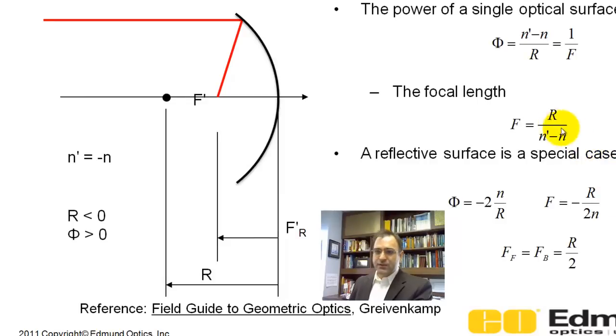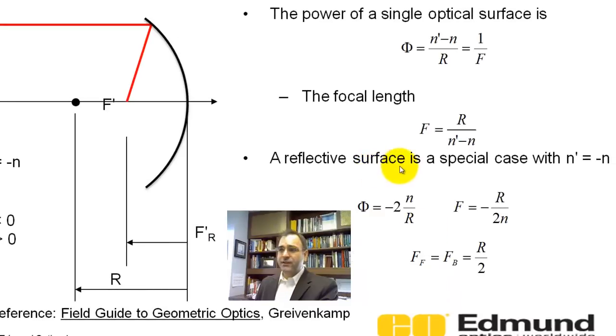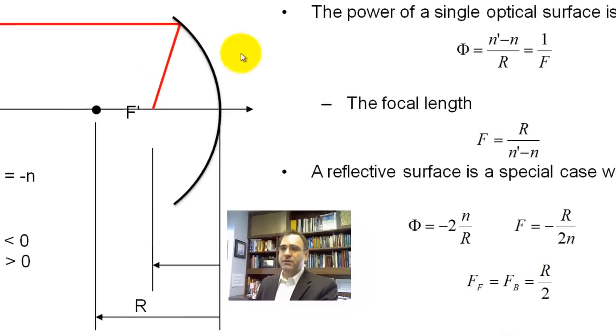For reflective surface, I'm not going to go into much detail. Again, I'll reference you to Grievenkamp's book. I just want to point out that for a reflective surface, it's a special case where your secondary medium is actually the negative of your incident medium. So N prime here equals negative N.